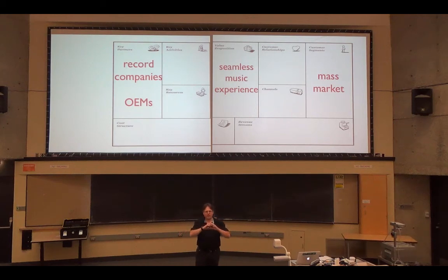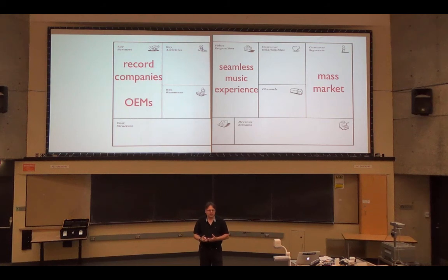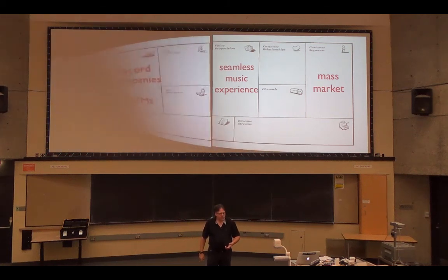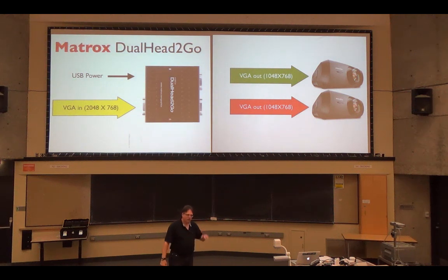So once you stop thinking about I've got screen one, screen two, and start thinking about I have a massive screen, I have this giant canvas that I can play with, you'll start to change up how your presentations look and feel. All it takes is about $200 to buy a Matrox box and change the setup on your presentation software. And away you go.